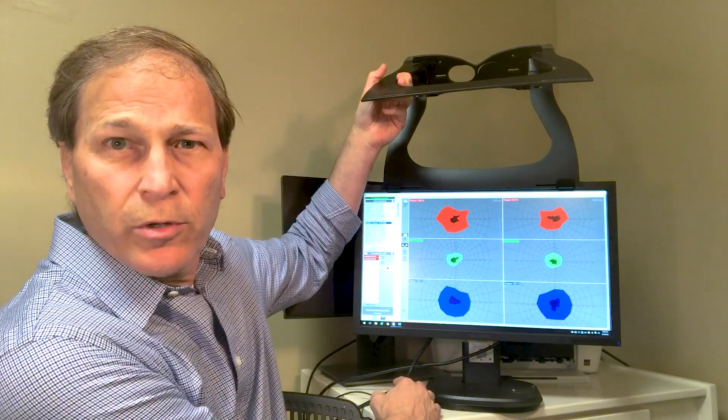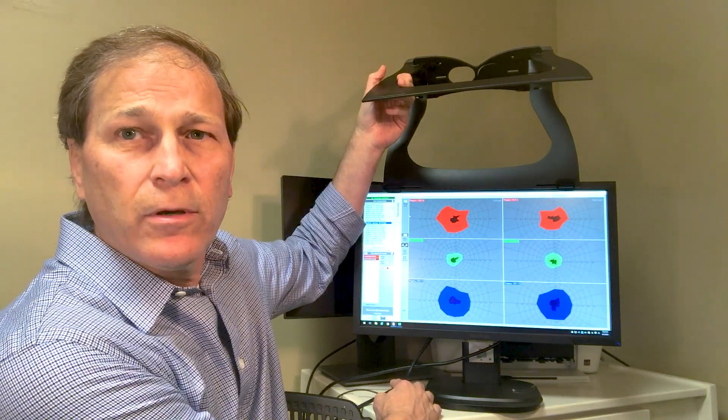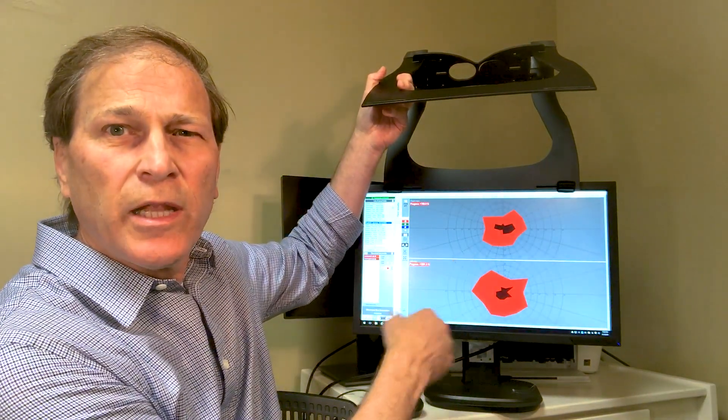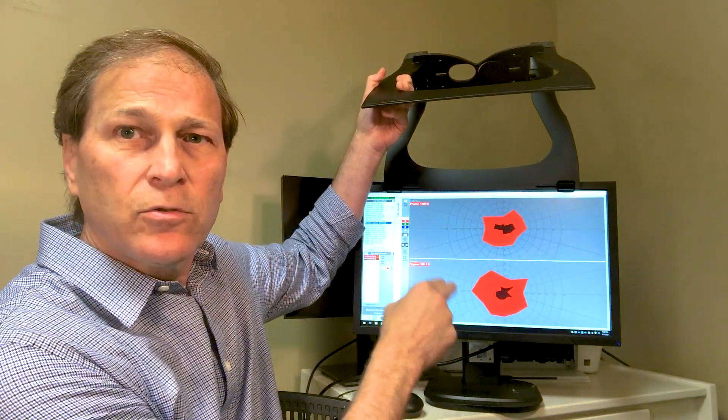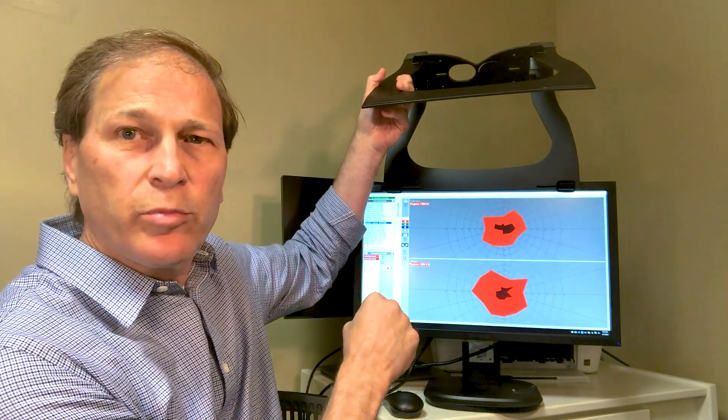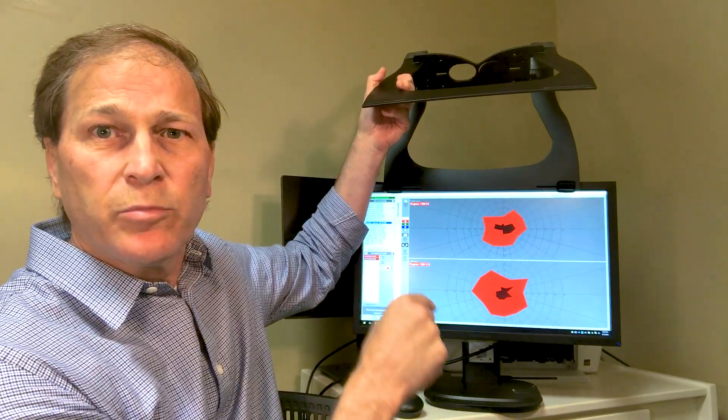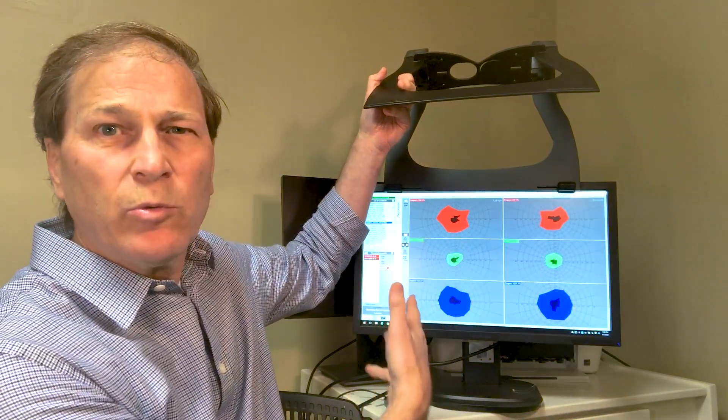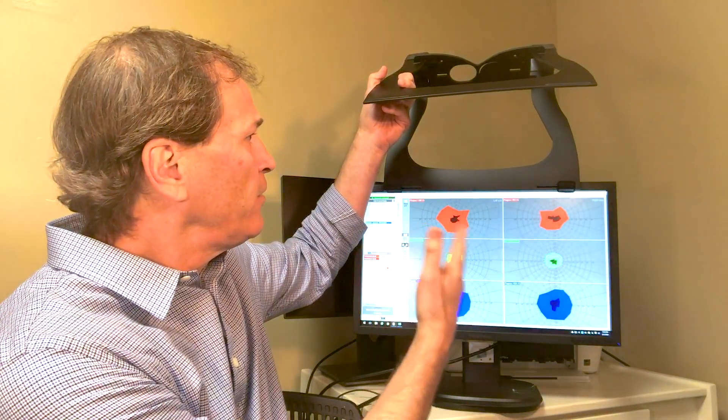Automatically the computer keeps track of before and after therapy field results. For example, here's a red field, the light area being the most recent field, superimposed onto the original field before therapy. The dark area is pre-therapy. And you can show this for any of the colors or all of them at once. Right eye, left eye.